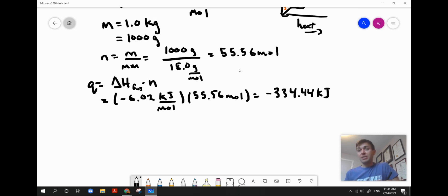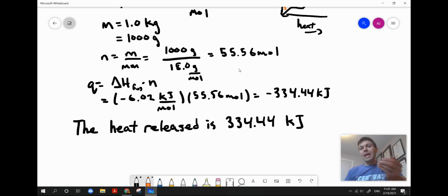Here's how we write this final statement. Note that as I write that value as a statement, I omit the negative sign. And that's because the word released is what the negative sign means when we're talking about heat of fusion or heat of vaporization.